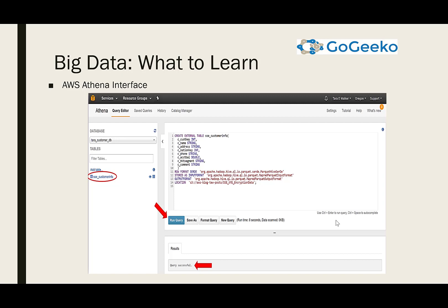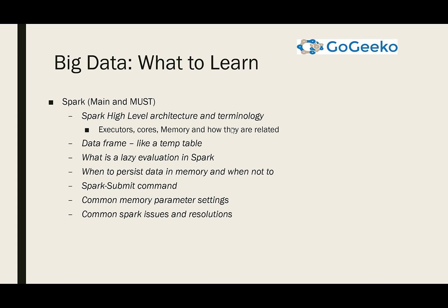Spark is probably the main thing you really need to know when it comes to big data, because Spark is not just for Hadoop — it's used behind Databricks, which is very powerful. You don't need a Hadoop cluster if you use Databricks; it will automatically scale more EC2 machines in AWS and similarly in Azure. Things you need to know in Spark include: high-level architecture and terminology, what executors, cores, and memory are and how they relate, and what a DataFrame is — it's basically like a temp table or view; it doesn't hold data until the query is executed.